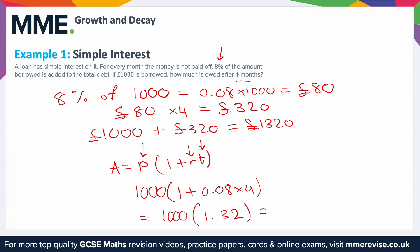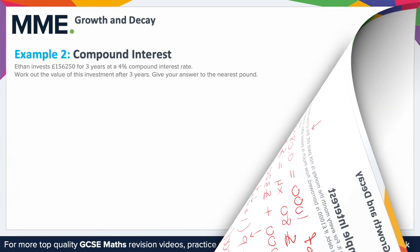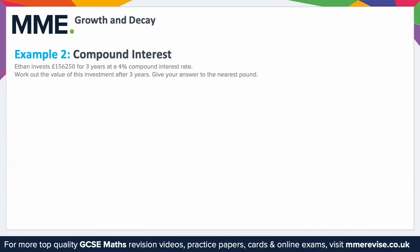Multiplying out, you get 1,320 pounds. So those are two ways to tackle it — the intuitive way if you don't know the equation, and the formula way which is a little quicker, especially with a calculator. Either approach is perfectly fine. Example two: compound interest.